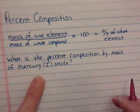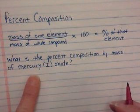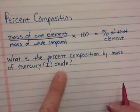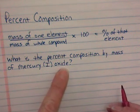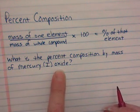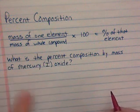So we're going to try working this problem. What is the percent composition by mass of mercury roman numeral one oxide? The very first thing you should be doing is saying, that's not a formula, I can't find the molar mass of that. So we have to figure out the formula.